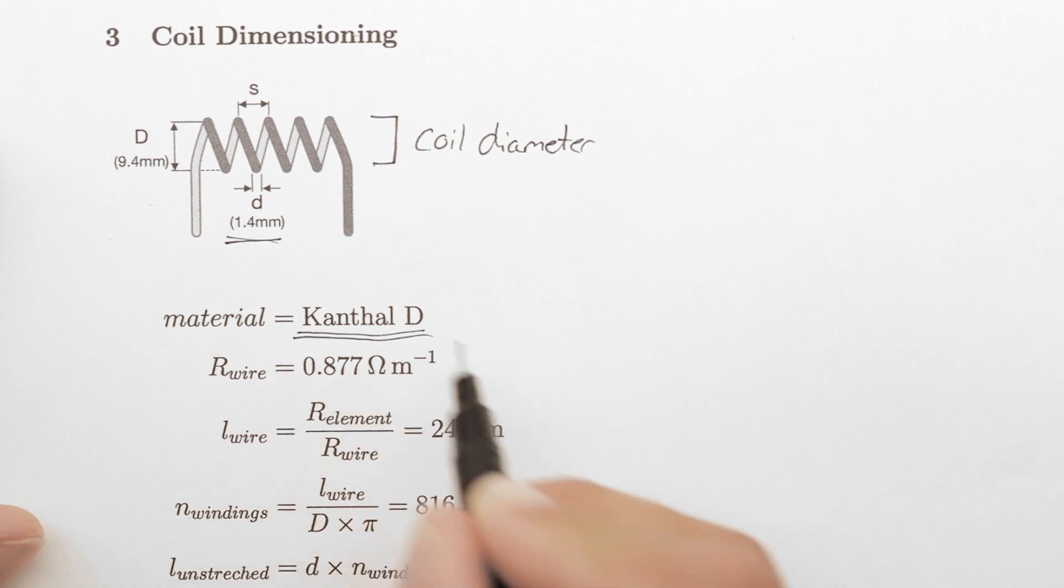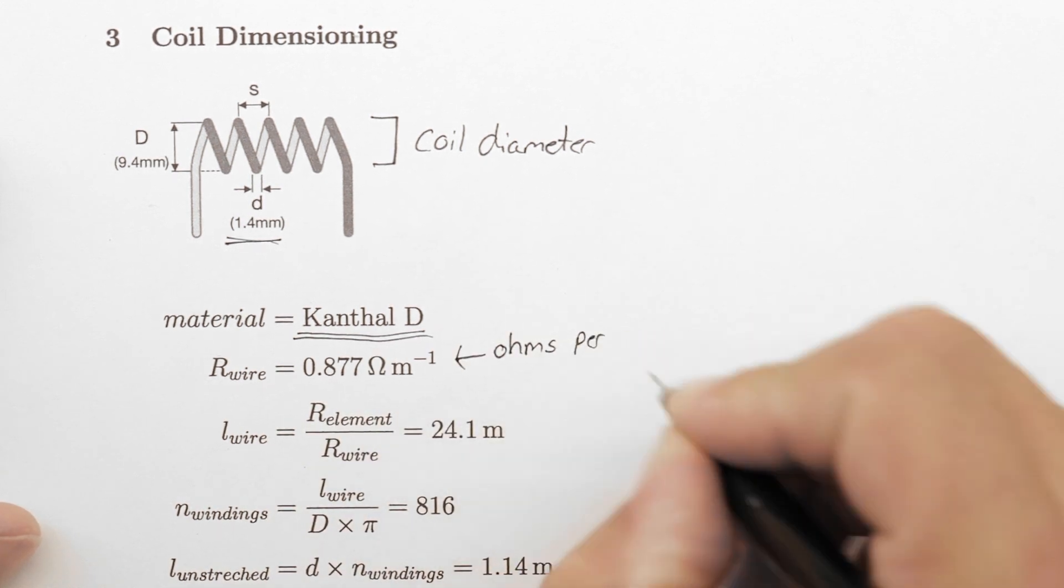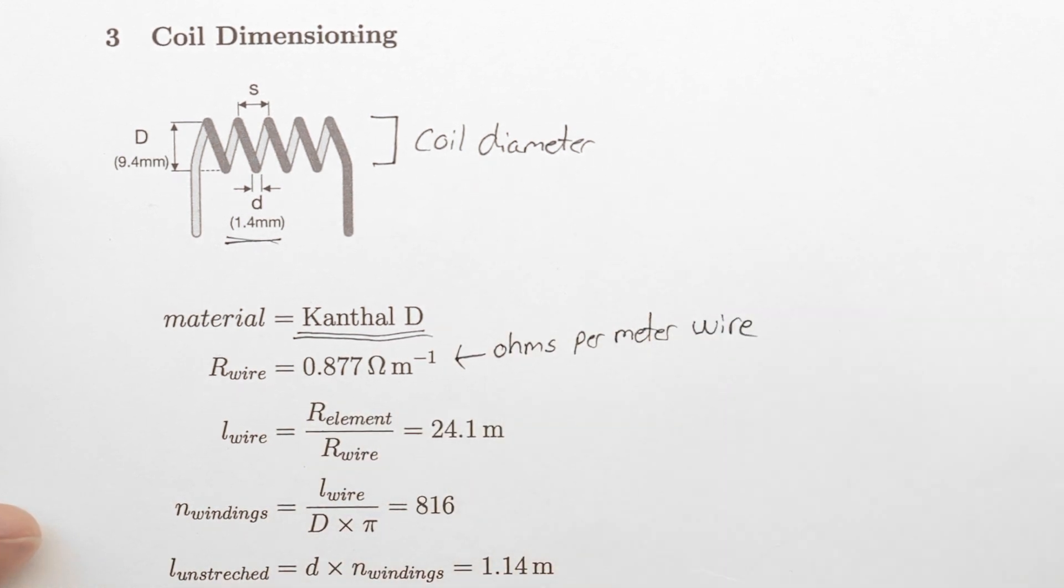According to its datasheet, it has a resistance of 0.877 ohms per meter. The required length of heating element wire is determined by dividing the desired resistance by the resistance per meter. This gives us 24.1 meters.